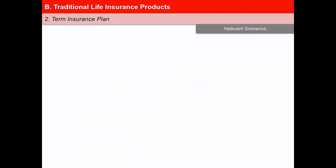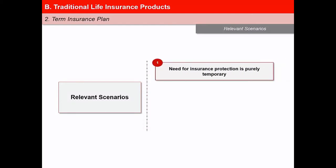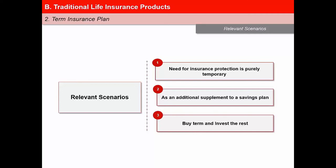The scenarios where term insurance holds much relevance are: firstly, where the need for insurance protection is purely temporary, as in case of mortgage redemption or for protection of a speculative investment; secondly, as an additional supplement to a savings plan — convertible term insurance may be suggested where a permanent plan is non-affordable; and thirdly, as part of a 'buy term and invest the rest' philosophy, where the buyer seeks cheap term insurance protection and invests the resultant premium difference in a more attractive investment option elsewhere.